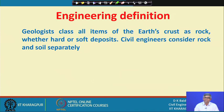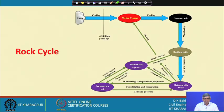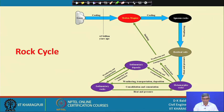In the engineering definition, geologists classify all items of the earth's crust as rock whether hard or soft, whereas civil engineers consider rock and soil separately. There are different types of rocks possible, and how rock forms and then from rock how soil forms — these are all different situations and processes.